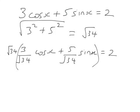So this equation here is the same as this equation here. I've divided by the square root of 34 and I've multiplied by the square root of 34. I can now compare this, the bit inside the bracket, with sin alpha cos x plus cos alpha sin x.